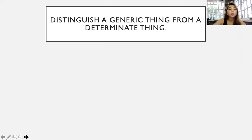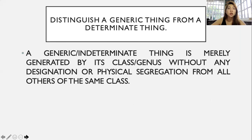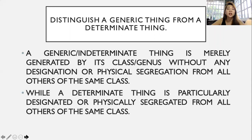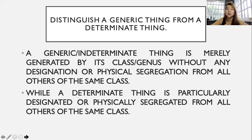Distinguish a generic thing from a determinate thing. This is in obligations to give. A generic or indeterminate thing is merely identified by its class or genus without any designation or physical segregation from all others of the same class — for example, a Rolex watch, a black Honda SUV, a German Shepherd dog. It is not irreplaceable per se. On the other hand, a determinate thing is particularly designated or physically segregated from all others of the same class — for example, a black Honda Civic with plate number ABD 5174, or the watch Riley wore on his graduation date, or the house at the end of Sampaguita Street in Pasig City — very particular.